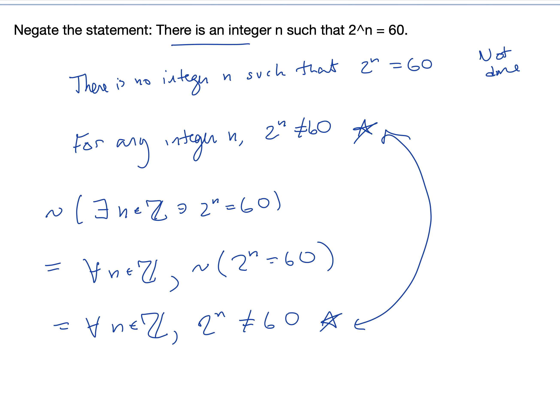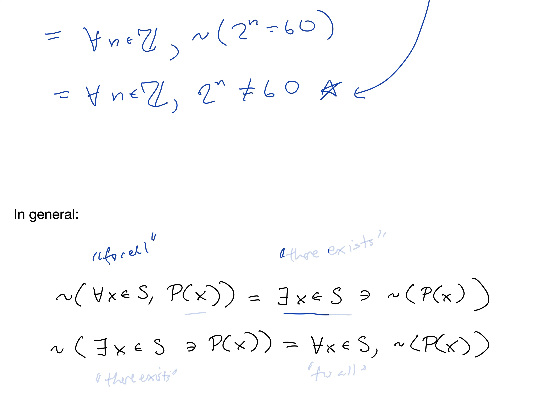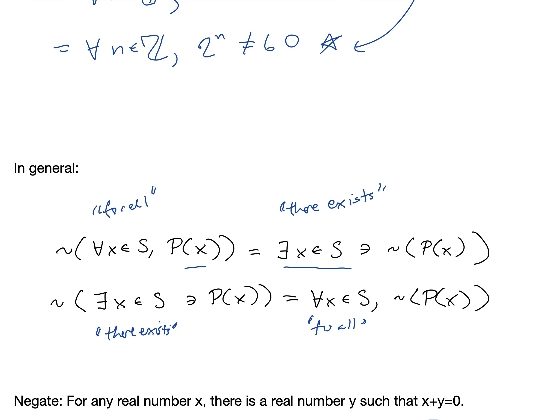In general: the negation of a for-all statement gives a there-exists statement. The negation of 'for any x in set S, P(x) is true' is 'there is some x in S such that P(x) is false.' Similarly, the negation of a there-exists statement is a for-all statement. The negation of 'there exists x in S such that P(x) is true' is 'for every x in S, P(x) is false.'